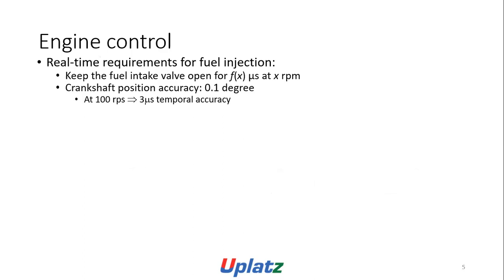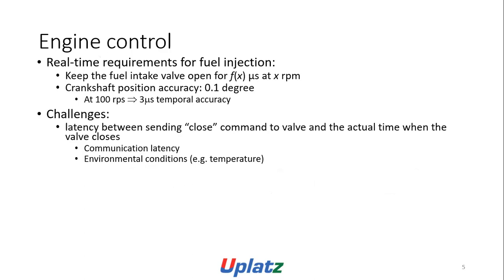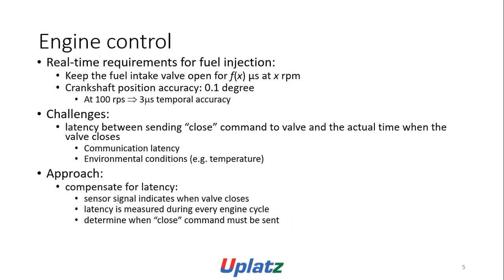Engine control real-time requirements for fuel injection: keep the fuel intake valve open for X microseconds at X RPM. Crankshaft position accuracy is 0.1 degree at RPM, with 3-microsecond temporal accuracy. Challenges include latency between sending the close command to the valve and the actual time when the valve closes, communication latency, and environmental conditions such as temperature. Approach: compensate for latency — sensor signal indicates when valve closes, latency is measured every engine cycle to determine when to close the valve.